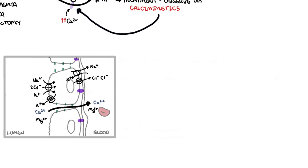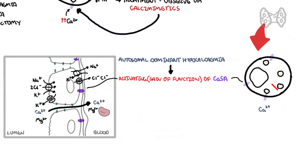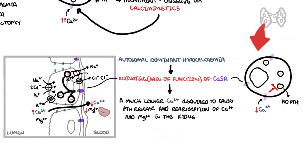Another calcium sensing disorder is autosomal dominant hypocalcemia, which is an activating gain-of-function mutation of the calcium sensing receptors. The calcium sensing receptors are overactive and tightly regulate parathyroid hormone release, essentially putting a brake on PTH release. In the kidneys, the activated calcium sensing receptor inhibits calcium and magnesium reabsorption. The graph shifts so that a much lower calcium level is required to trigger PTH release and calcium reabsorption in the kidney. Patients with autosomal dominant hypocalcemia typically have mild hypocalcemia.